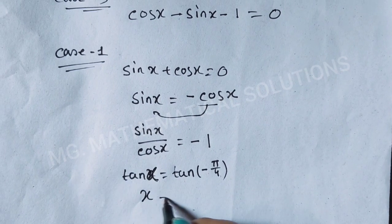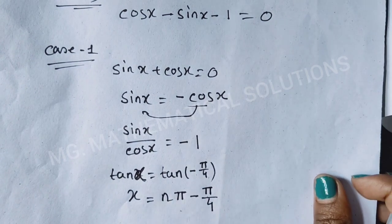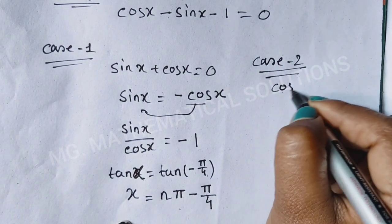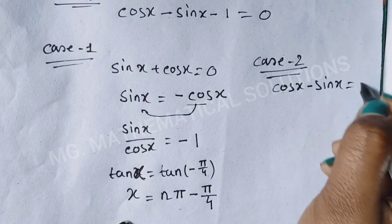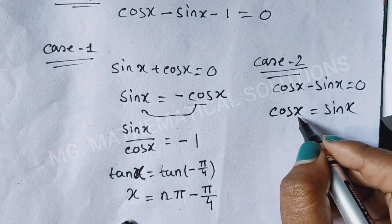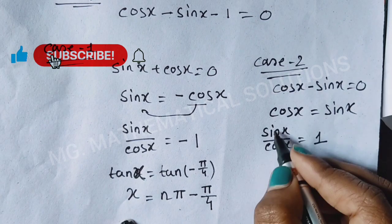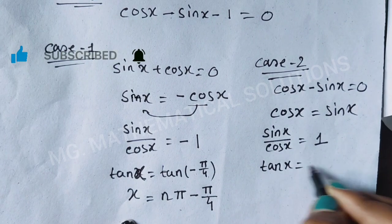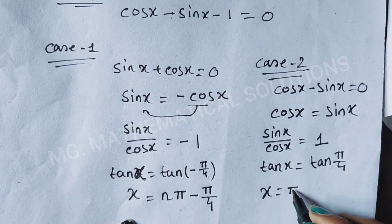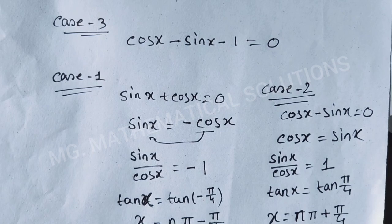Now we solve Case 2: cos x − sin x = 0, so cos x = sin x. Dividing gives sin x / cos x = 1, meaning tan x = 1 = tan(π/4). Therefore x = nπ + π/4.